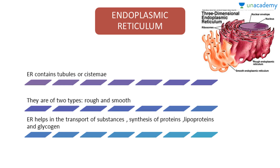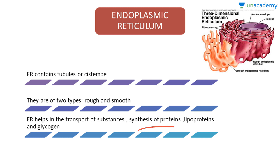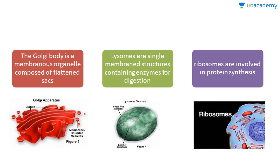First, the endoplasmic reticulum, commonly known as ER. It contains tubules or cisternae, which you can see here. There are two types: rough and smooth endoplasmic reticulum. The ER helps in transport of substances and synthesis of proteins, lipoproteins, and glycogen. The Golgi body is a membranous organelle composed of flattened sacs, which you can see here.